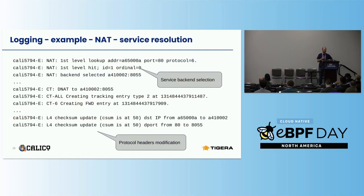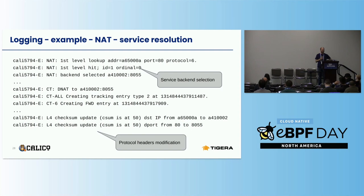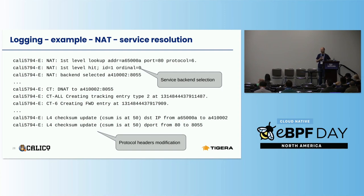In the more complex case of services and network address translation, you would see lines like these. In the first batch, we try to match it against a service — unlike in the previous example, we have a hit in the first table. We got a service with a certain ID and picked an ordinal for the backend. Then we go and read the backend and report which backend was selected. When we create the conntrack entry, we also have to create a second entry as mentioned before. As we flow through the rest of the program, we also have to actually execute the DNAT — so we patch the destination IP and the destination port into the packet, update checksums, and then carry on as shown on the previous slide.